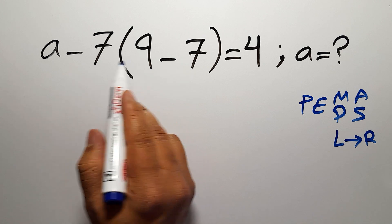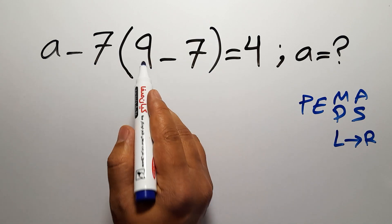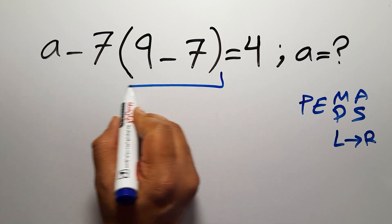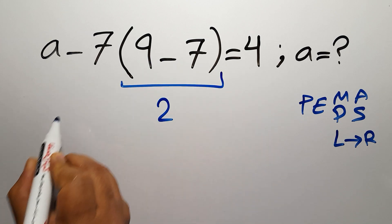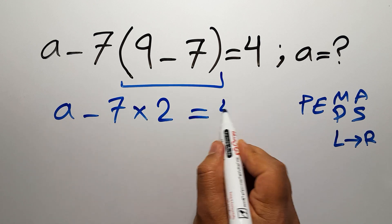So here, first we have to do this parentheses. 9 minus 7 gives us 2. So we have a minus 7, then times 2 equals 4.